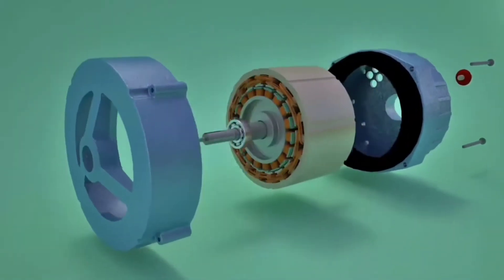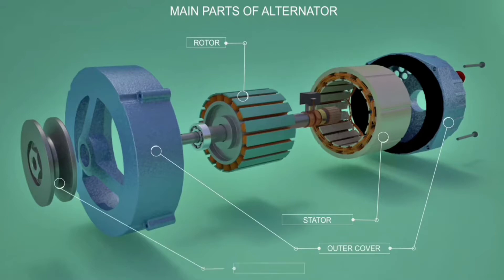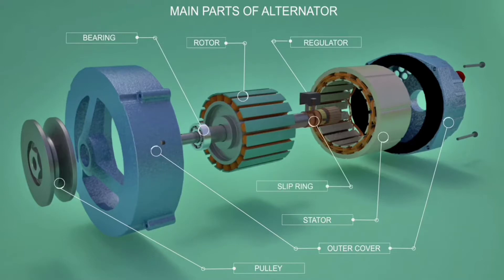Main parts of the alternator are rotor, stator, outer cover, pulley, regulator, bearing, slip rings and DC generator.